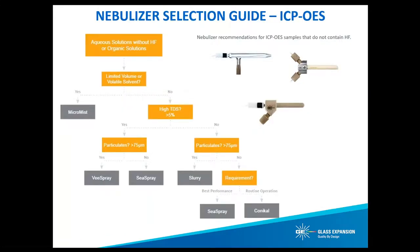This first flowchart summarizes various nebulizer recommendations for ICP-OES samples that do not contain hydrofluoric acid. It's not recommended that a glass or quartz nebulizer be used with any amount of hydrofluoric acid. The particular nebulizer selected should also closely match the desired sample uptake rate. You can visit the Glass Expansion website geicp.com for a complete listing of each nebulizer model and the available uptake rates. For any concentration of total dissolved solids greater than 1%, we recommend the use of an argon humidifier for optimum nebulizer performance and long-term stability.